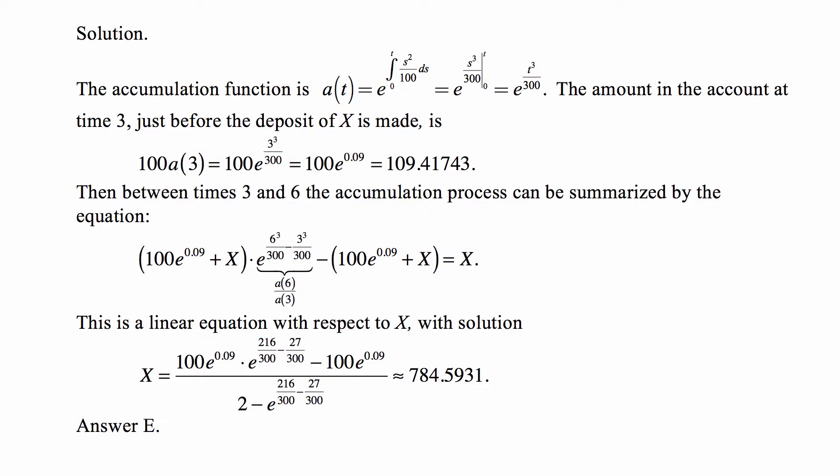Between times 3 and 6, the accumulation process can be summarized by this equation: we have the accumulated value of 100 times e to the 0.09 plus the deposit of x, accumulating from time 3 to time 6, so multiplied by a of 6 over a of 3.